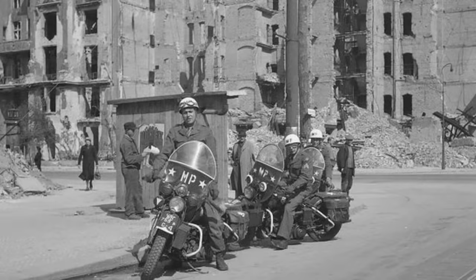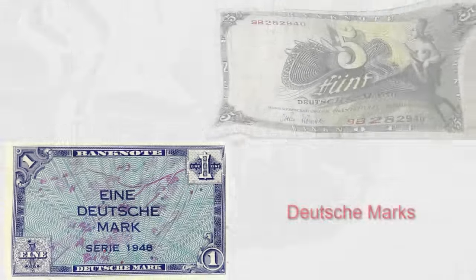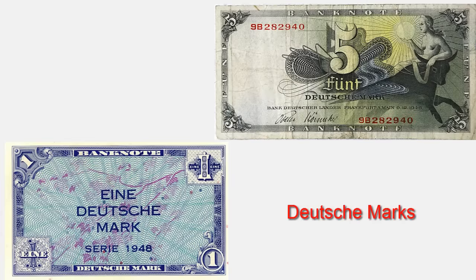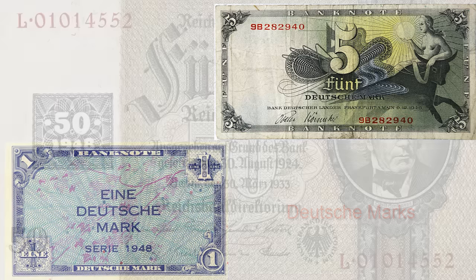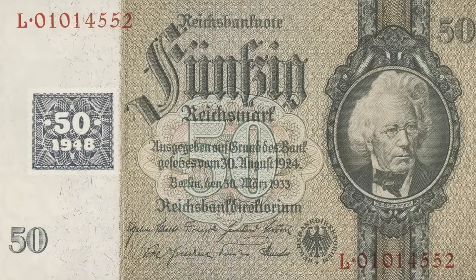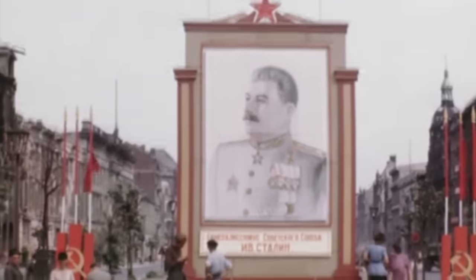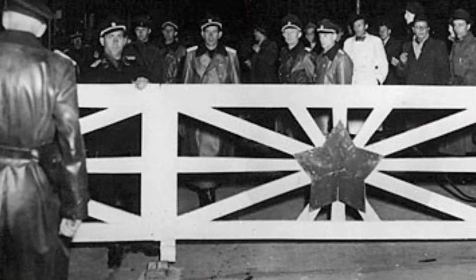In 1948, the American, British, and French regions of Germany announced that they would be creating and using a new currency called the Deutschmark. This would replace the old German currency known as the Reichmark. In response to this decision, the Soviet Union halted all traffic between East Berlin and West Berlin. They also severed all communications with the non-Soviet sectors of the city.